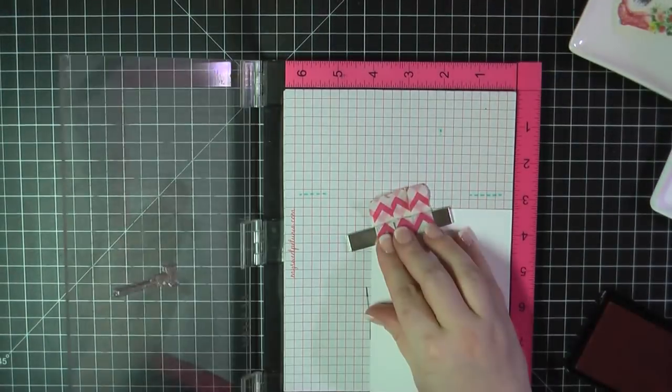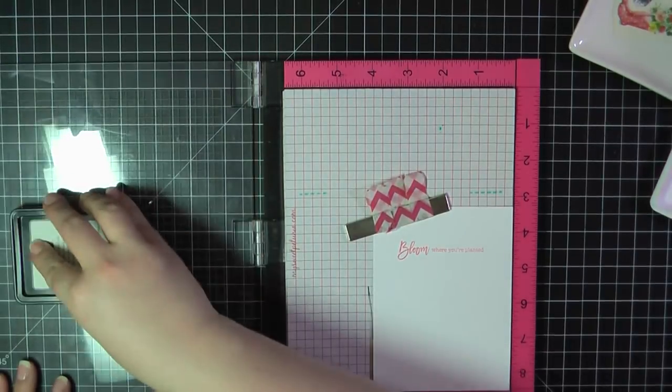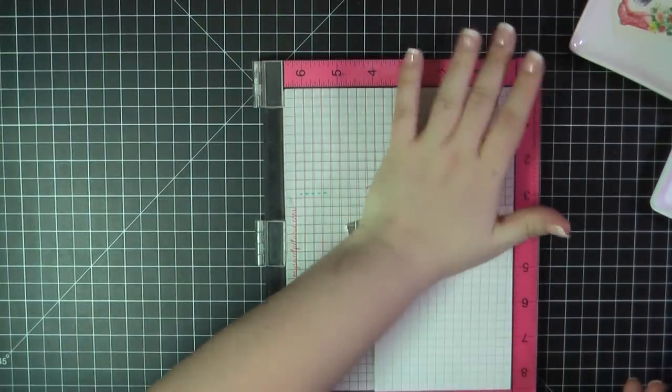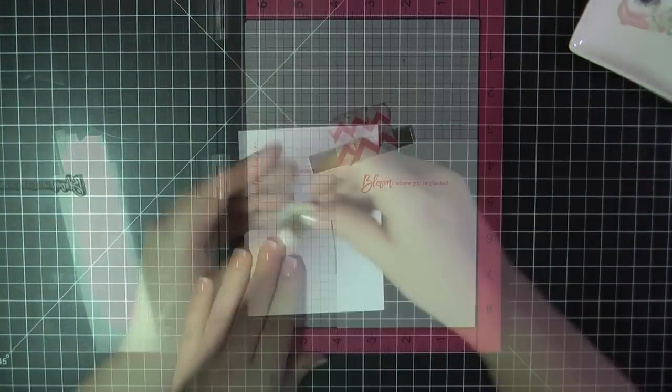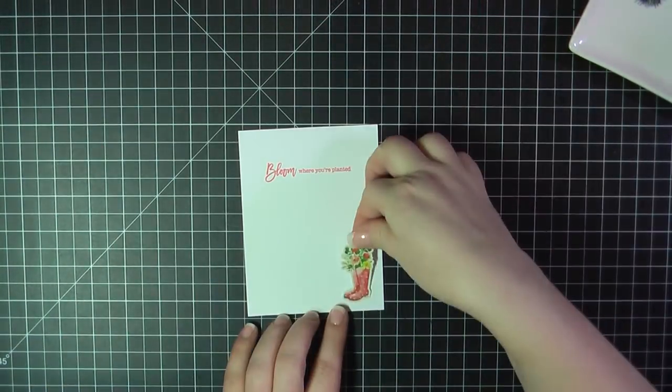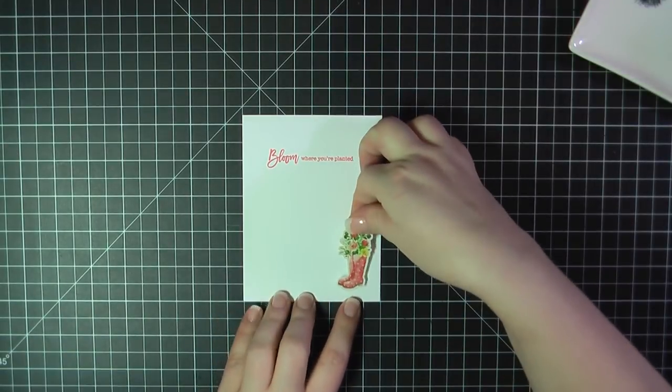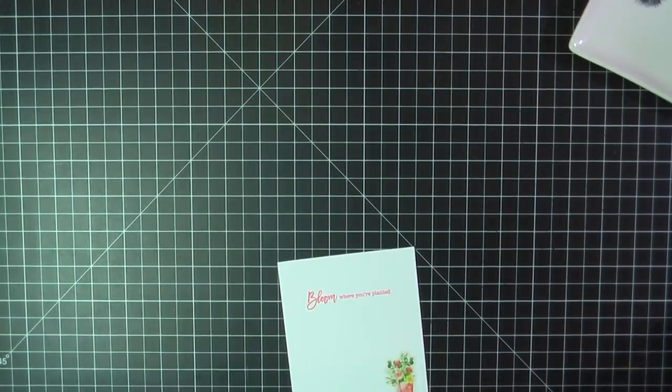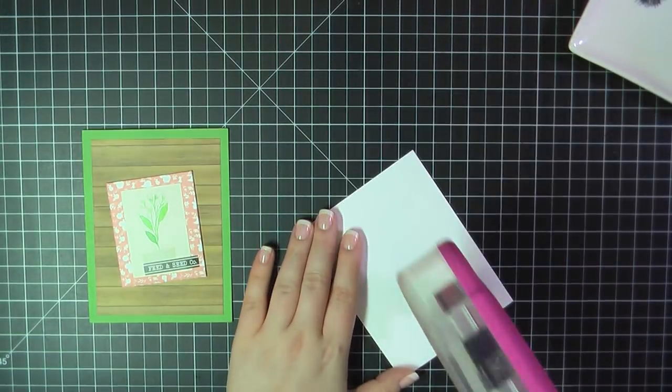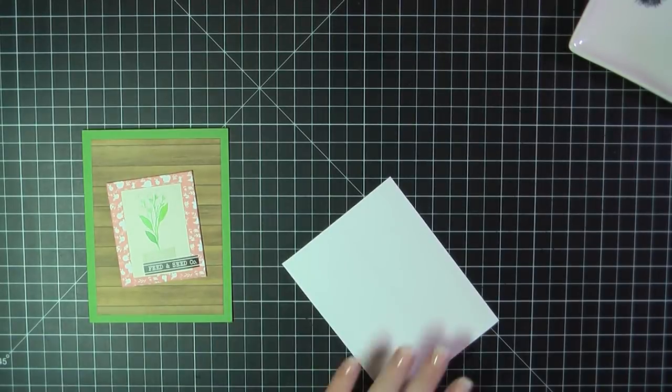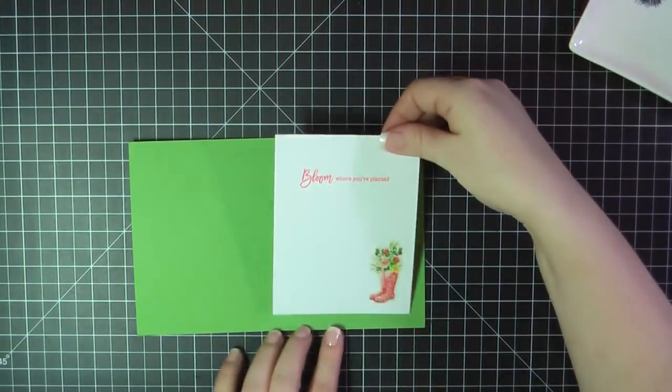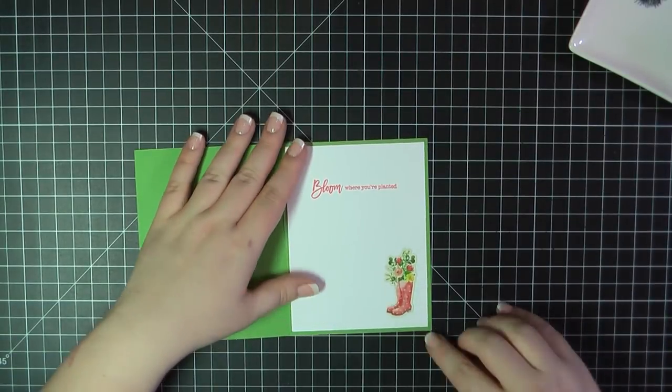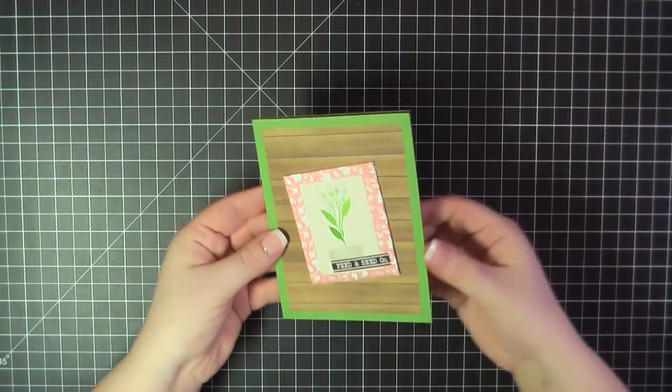For the inside of my card, I'm using a Neenah panel trimmed to 4 by 5 and a quarter. I'm going to stamp the sentiment Bloom Where You're Planted using Lawn Fawn Peachy Keen ink. I used this ink throughout the video. I completely forgot there was a pink and purple ink that came in the kit. There you saw I added one additional sticker, those rain boots with the flowers coming out of them at the bottom corner. I'm going to attach this on the inside using my ATG gun. And that will complete card number one.